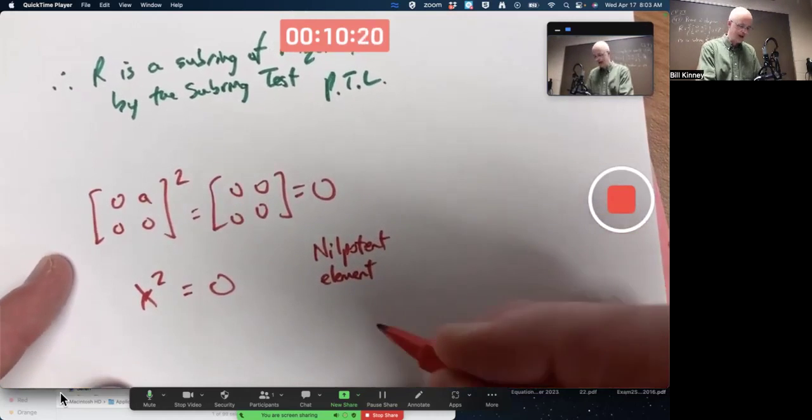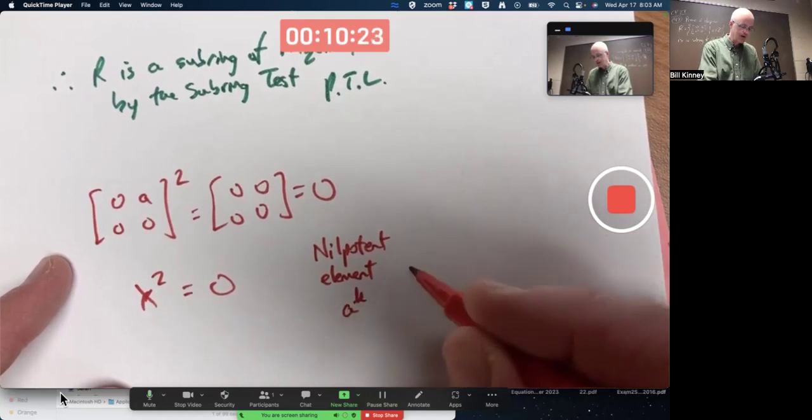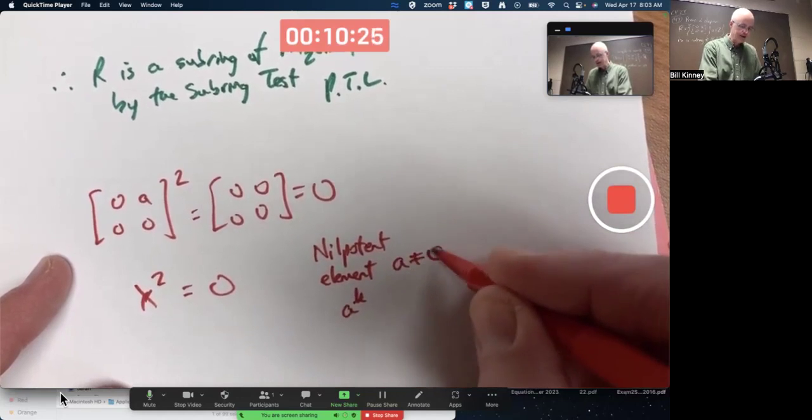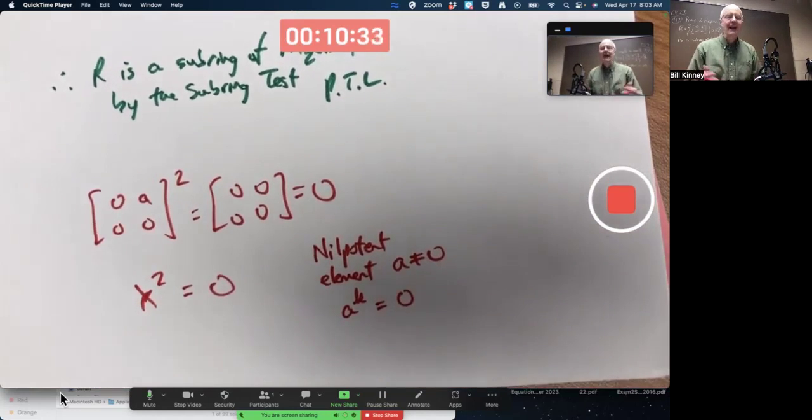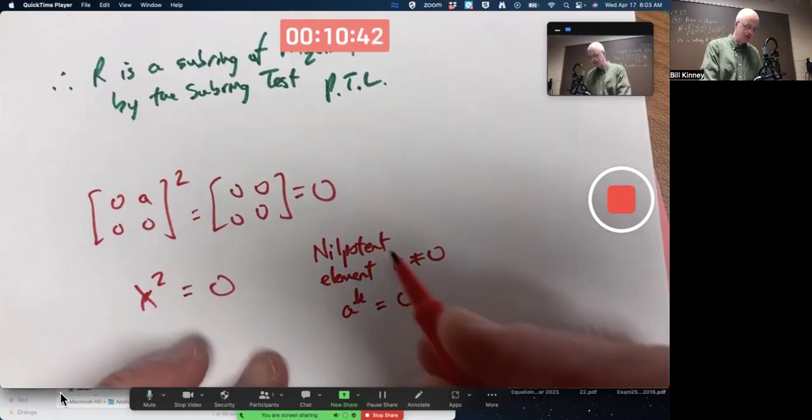It's an element of a ring such that if you raise it to a power, it's a non-zero element of a ring, such that if you raise it to a non-zero power, well, any power, you get the zero matrix. Not that any power will give you the zero matrix, but some power, some integer power of it gives you the zero element.